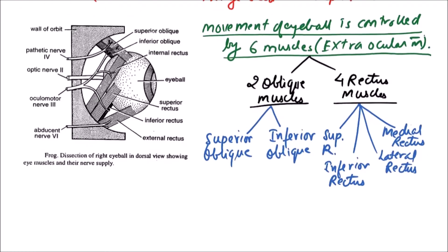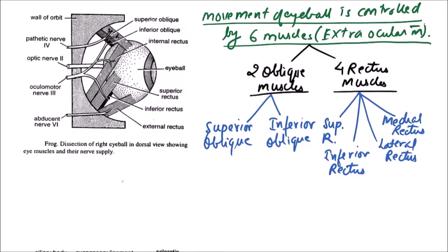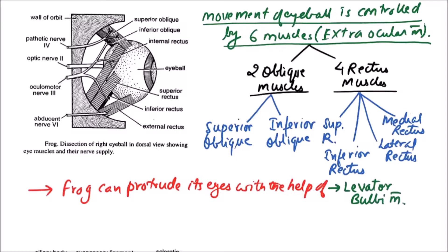These are six types of muscles attached to each eyeball of frog. In addition, there are some more muscles. Frog can protrude its eyes with the help of levator bulbi muscle, while the frog can retract its eyes with the help of retractor bulbi muscle.